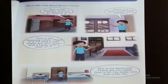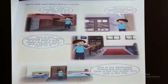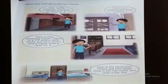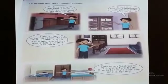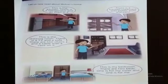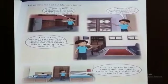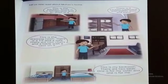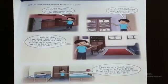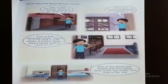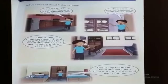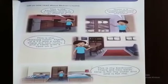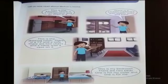Let us now read about Mohan's home. This is the kitchen. There is a refrigerator and an oven in it. There is a kitchen cupboard with plates, pots, and pans.